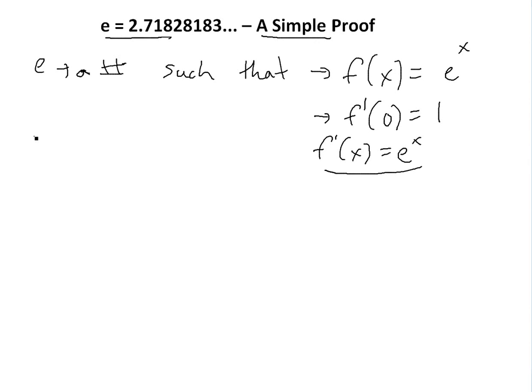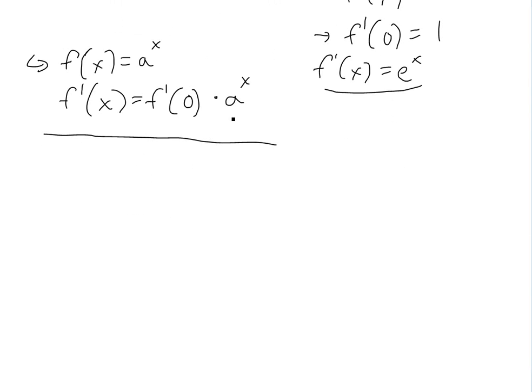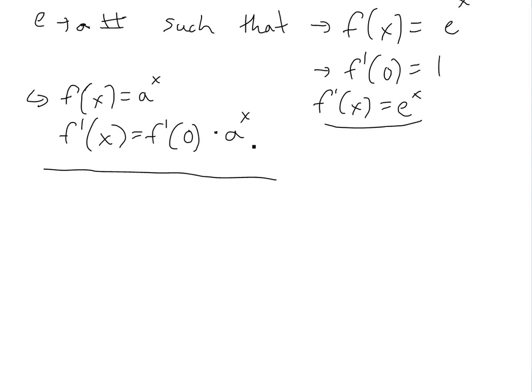And if you saw my other video, if it's anything but e, the derivative would just be different. If you have f(x) equals a to the x, then this is just a random number. I showed in my other video that for this regular exponential function, this derivative would be f'(0) times a to the x. So all we do is get rid of this based on this definition of e. So I'll show you how we can get this, how we can actually determine this number. So here's a simple proof.